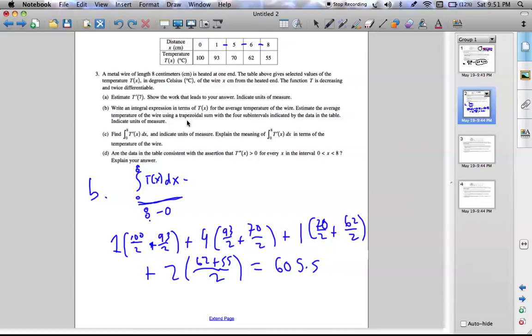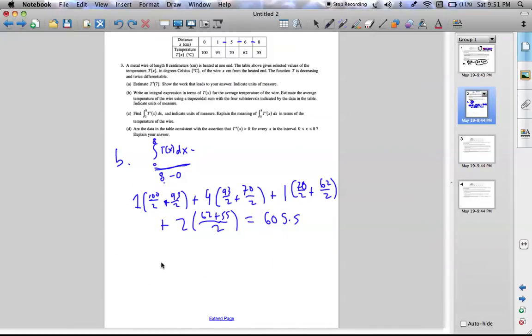So it's asking for the average temperature to be estimated. So 605, which is this value, divided by 8, this value. You get 75.69 degrees Celsius, average value on the interval from 0 to 8 of the temperature.